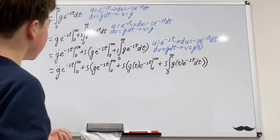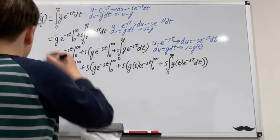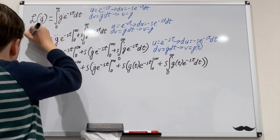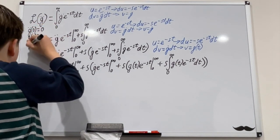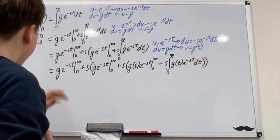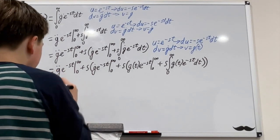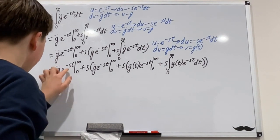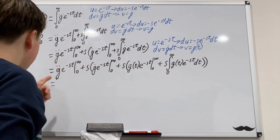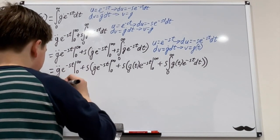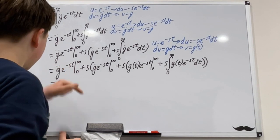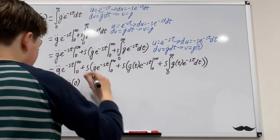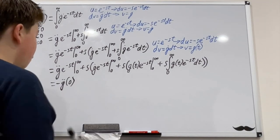Now we will need to use the initial conditions. For this differential equation the initial conditions are: g-double-dot of zero equals zero, g-dot of zero equals zero, and g of zero equals zero. When g-dot times e to the negative st has t approaching infinity, this becomes negative infinity so the whole thing is basically zero. And when t is zero, we get e to the zero — so one — times g-double-dot of zero. So all in all we get negative g-double-dot of zero, and then we can rinse and repeat for the rest of these.